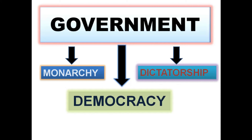Next is dictatorship. Dictatorship means one person ruling the country. For example, Adolf Hitler, and also in the modern world, North Korea is a country where dictatorship still exists. Next is democracy, like our country India, which is a form of government where people elect their own leaders. There are two types of democracy: direct and indirect democracy. Democracy is the most popular form of government in the modern world.